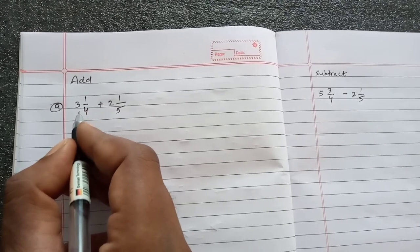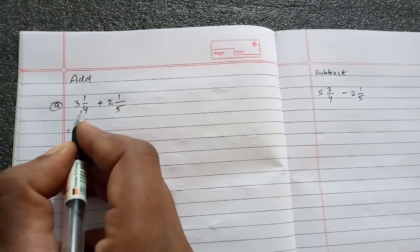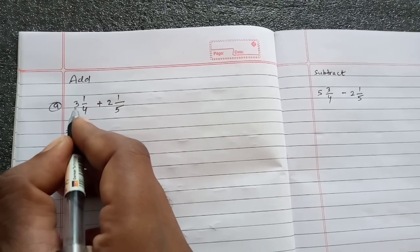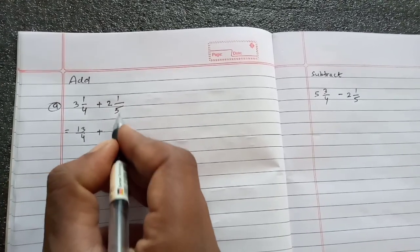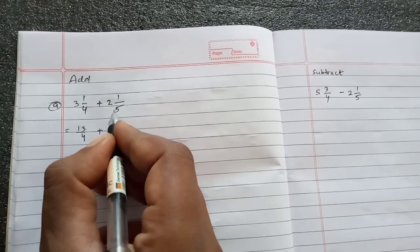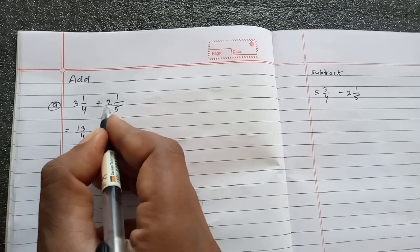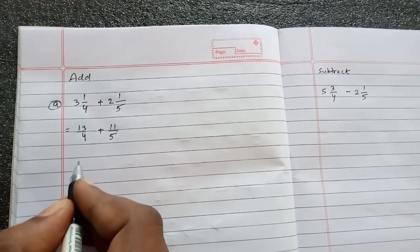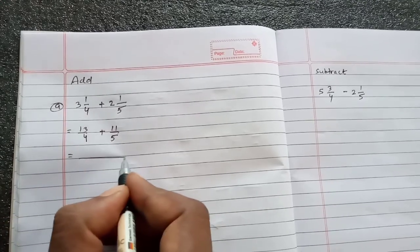First of all, multiply 4 into 3. 4 times 3 is 12, 12 plus 1 is 13, so 13/4. Again here, multiply 5 into 2, which is 10. 10 plus 1 is 11, so 11/5.